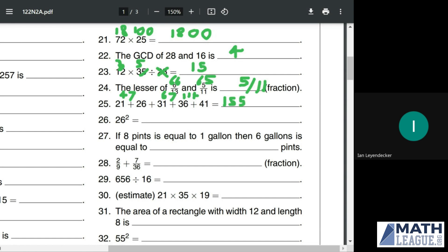26 squared, again, you should have your squares memorized up to 30. 26 squared is 676. That's three points.